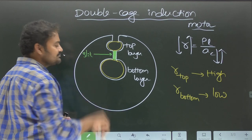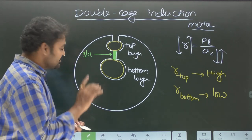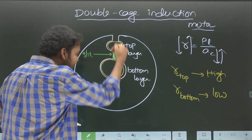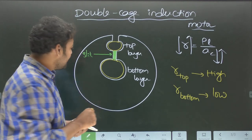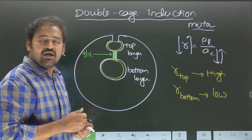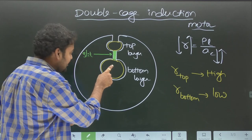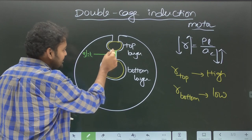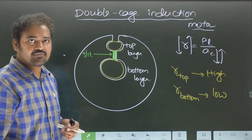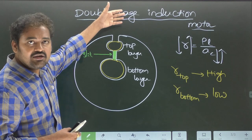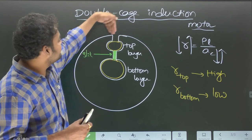The bottom layer is deep inside the rotor. When it carries current, copper losses generate heat in the bottom layer. That heat must be dissipated; otherwise the machine will overheat and get damaged. The slit helps transfer heat from the bottom layer to the top layer, and from the top layer that heat goes to the air gap medium, since air is the medium through which heat dissipates. For the top layer, being very near to the air gap, heat automatically dissipates.